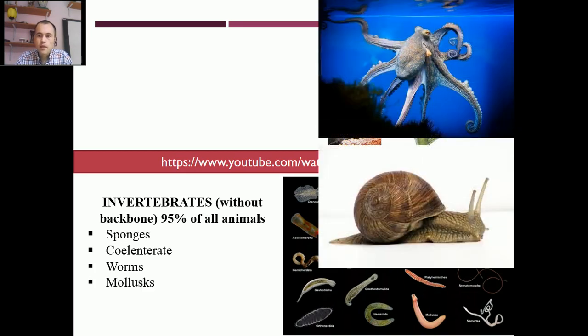The soft-bodied animals are called mollusks. They include octopus, squids, slugs, and snails. They have got a soft body.